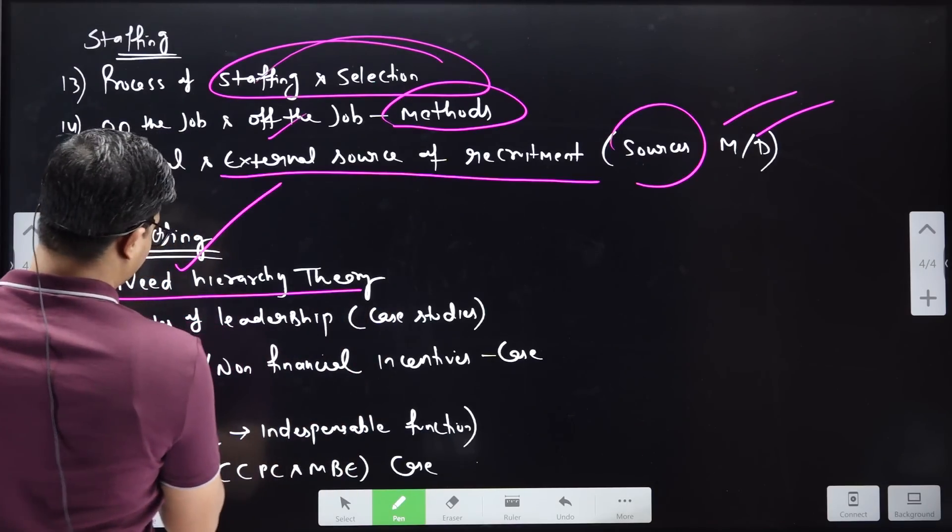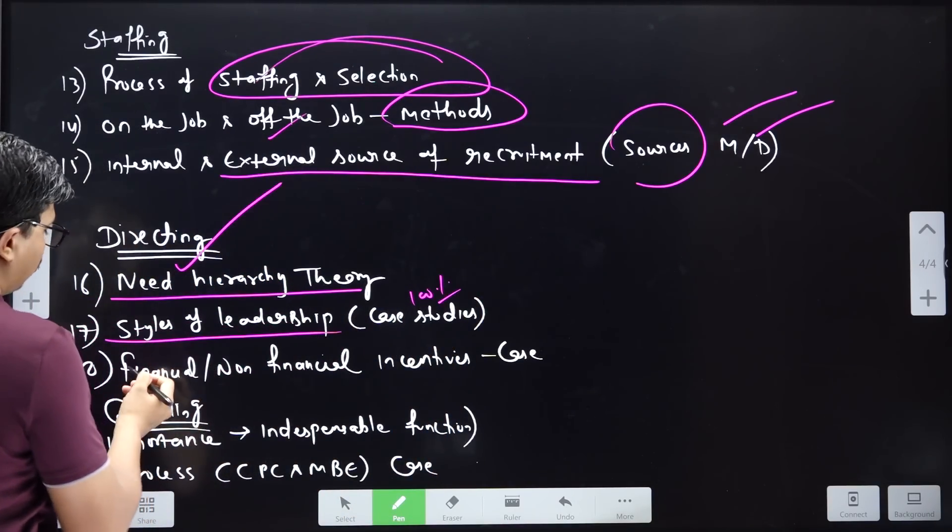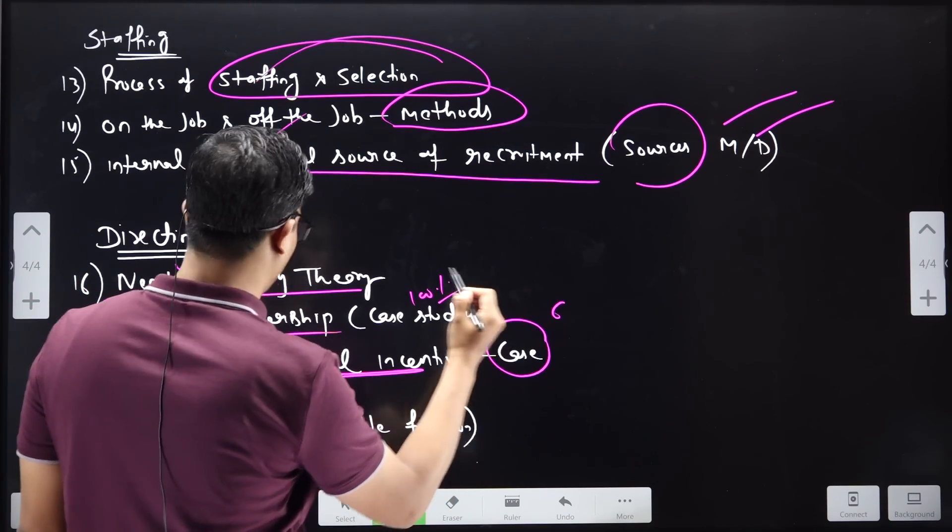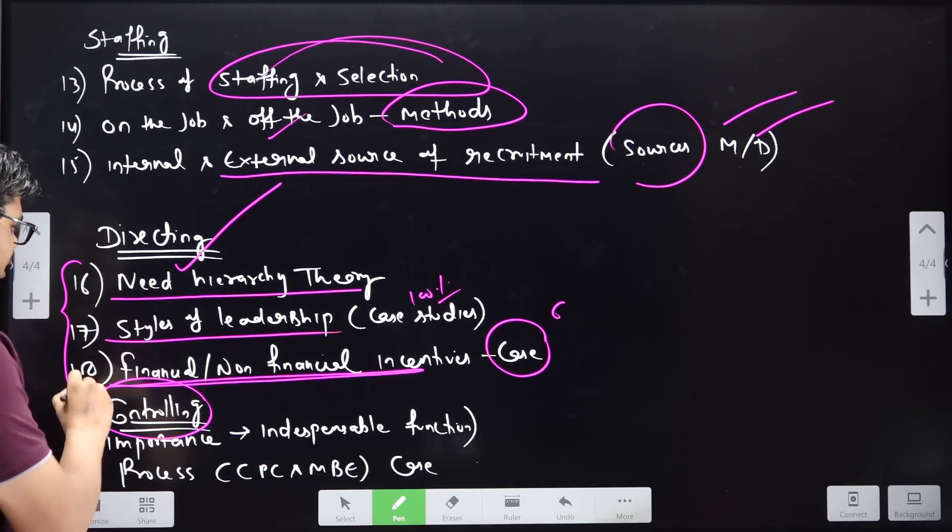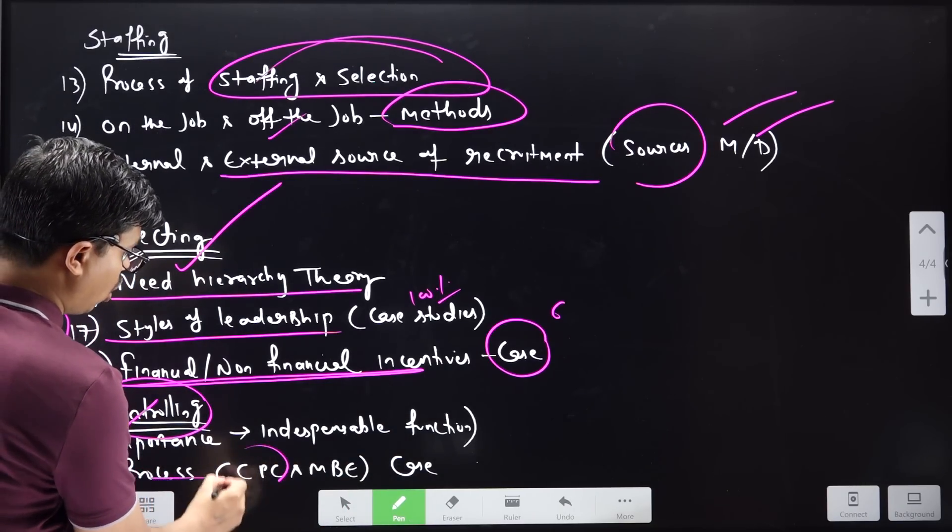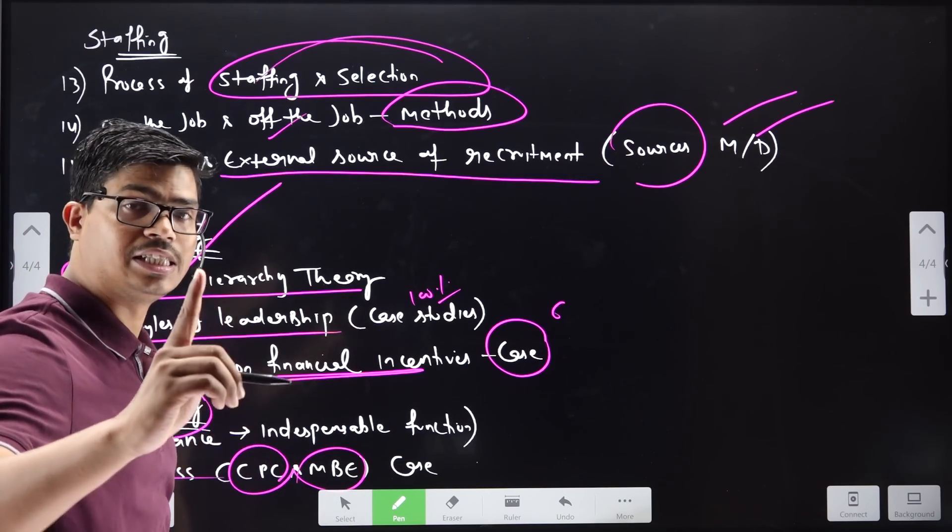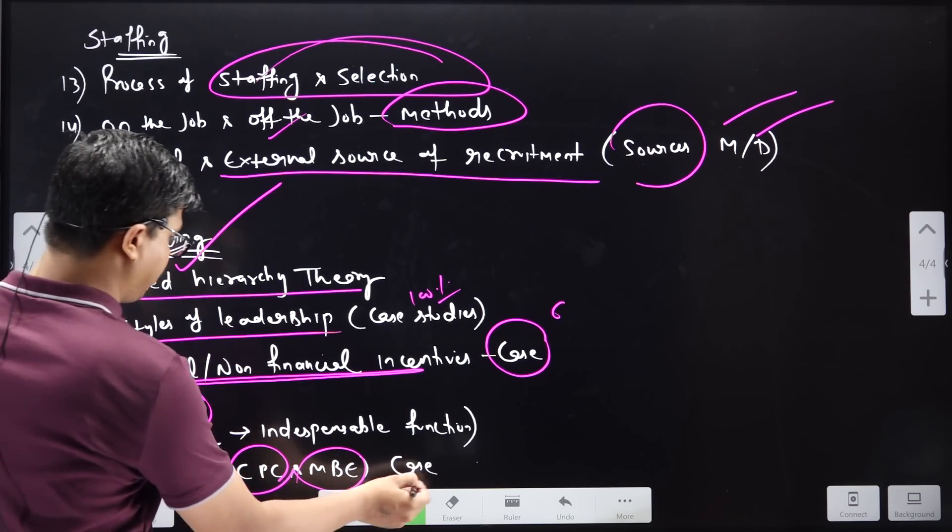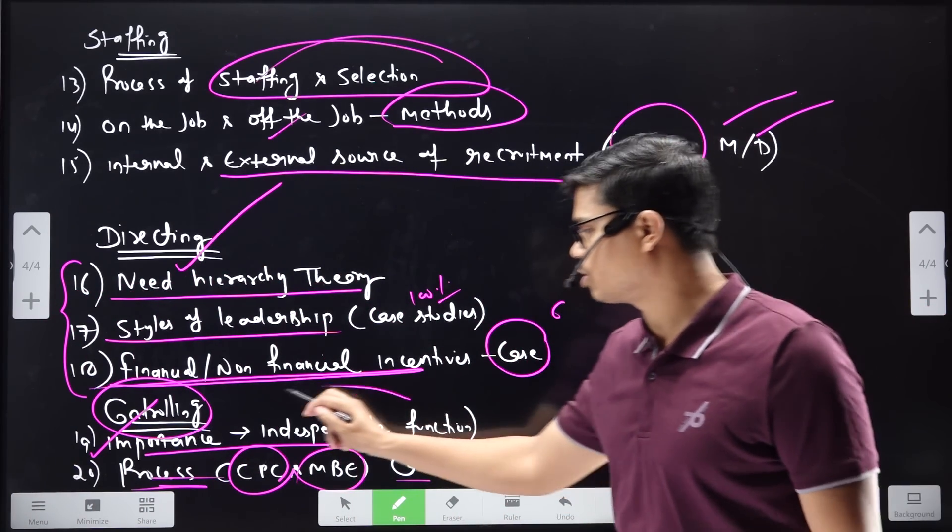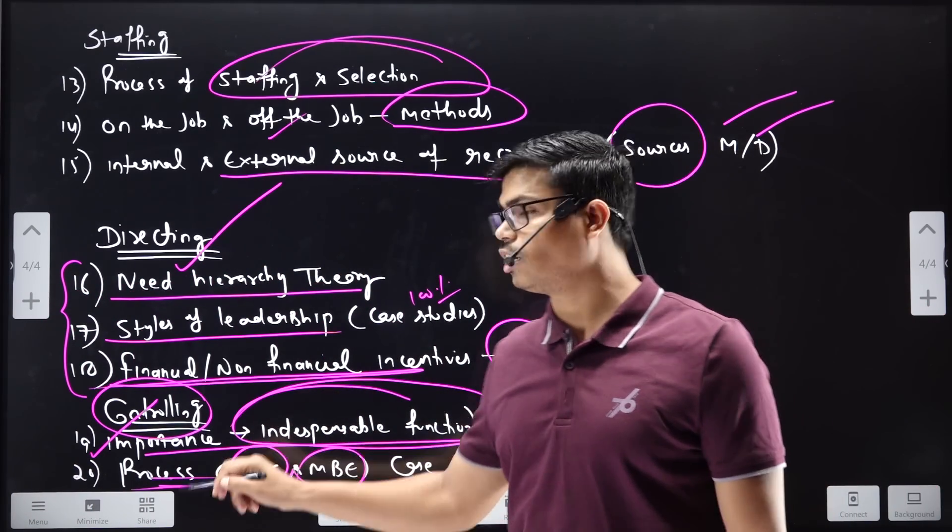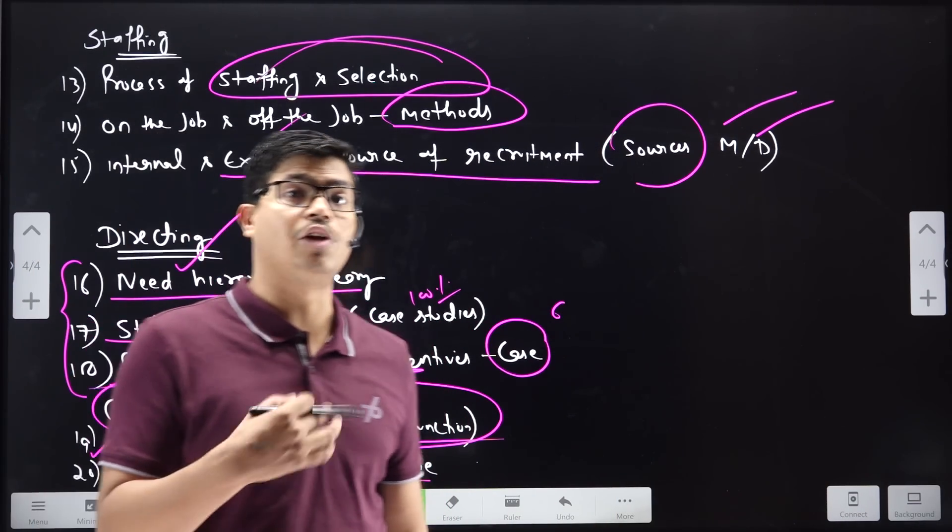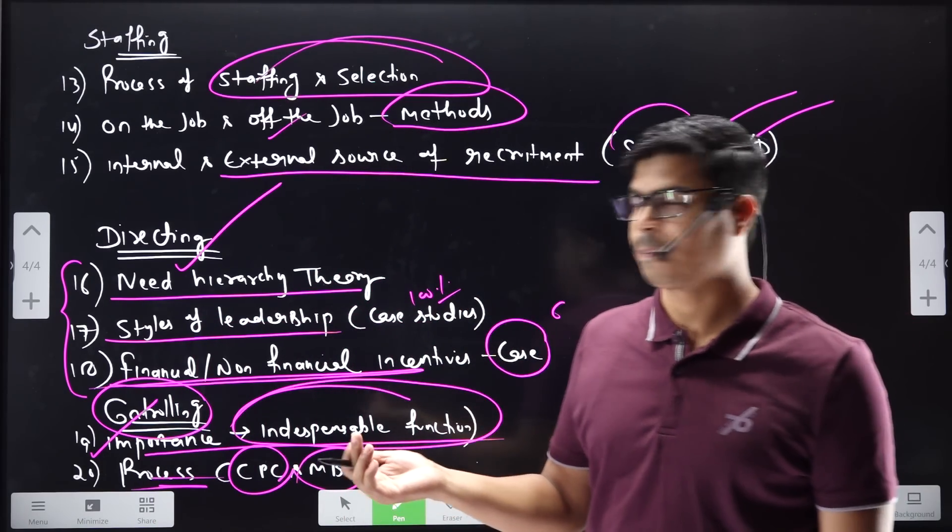Directing - the need hierarchy theory will be 100% from the case study. Financial and non-financial incentive case studies. In the controlling, controlling process and CP and MBE are very important for questions, and this can be in case study also. And the importance - controlling is the indispensable function, and even planning, which is basically thought process, and controlling is evaluative, and planning is prescriptive.